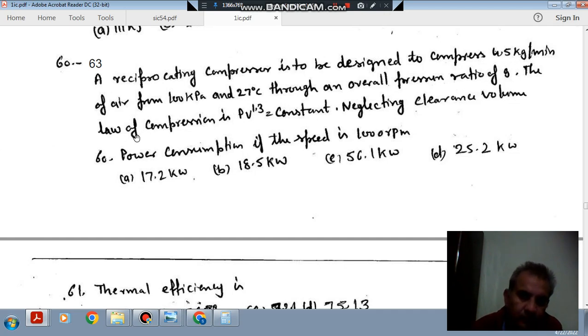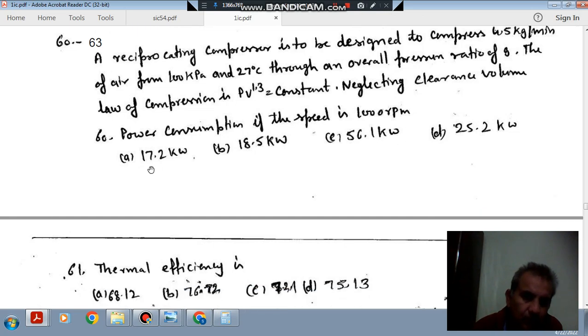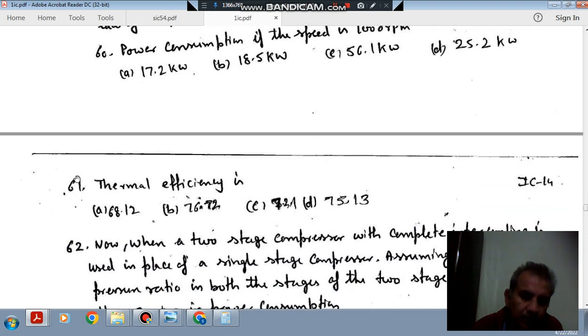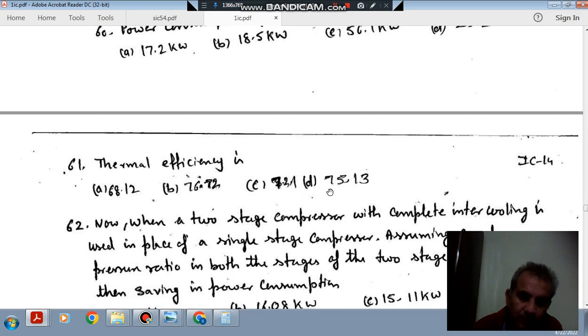The law of compression is PV^1.3 constant, neglecting clearance volume. Question 60 is: the power consumption if the speed is 1000 rpm? Options: (a) 17.2 kW, (b) 18.5 kW, (c) 56.1 kW, (d) 25.2 kW.